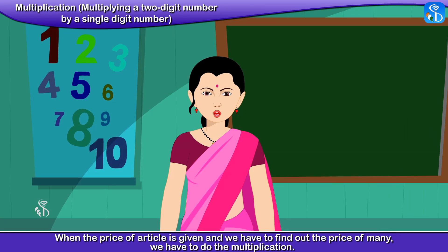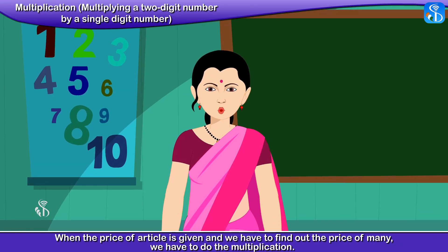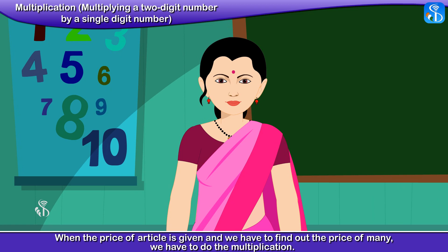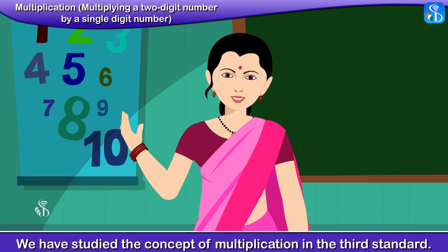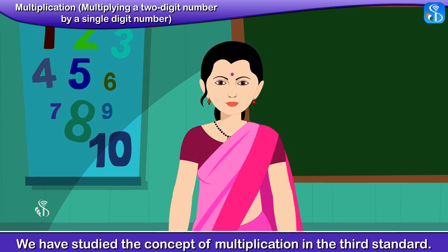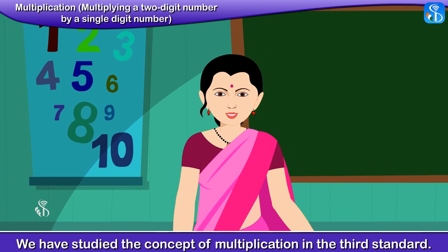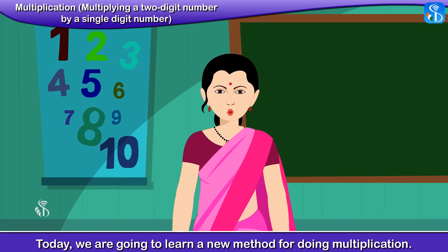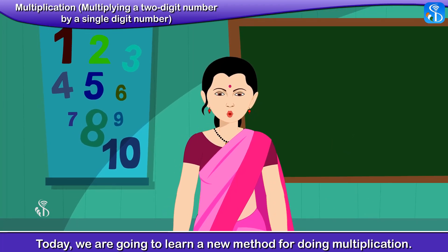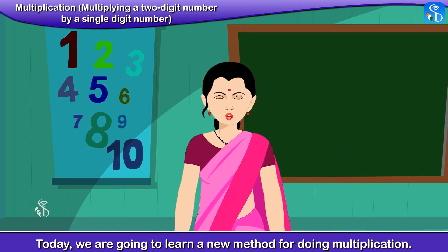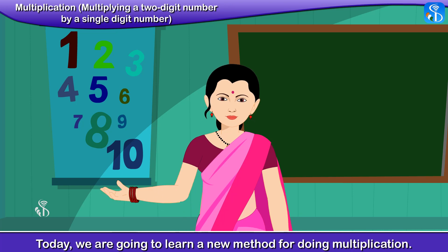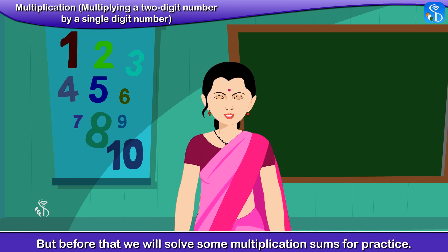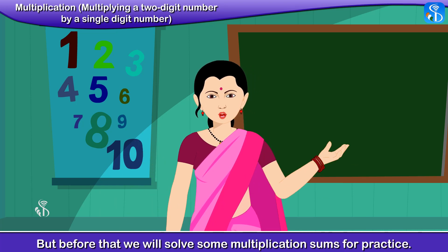When the price of an article is given and we have to find out the price of many, we have to do multiplication. We have studied the concept of multiplication in the third standard. Today, we are going to learn a new method for doing multiplication. But before that, we will solve some multiplication sums for practice.